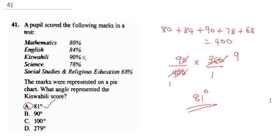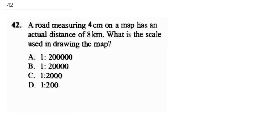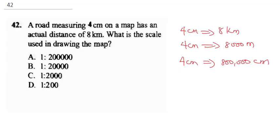Question 42 says a road measuring 4 cm on the map has an actual distance of 8 km. What is the scale used? It says 4 cm equals 8 km. Converting, multiply by 1000 to get 8,000 meters. To convert to centimeters, multiply by 100 to get 800,000 cm. Divide both sides by 4: 1 equals 200,000. The correct answer is B.